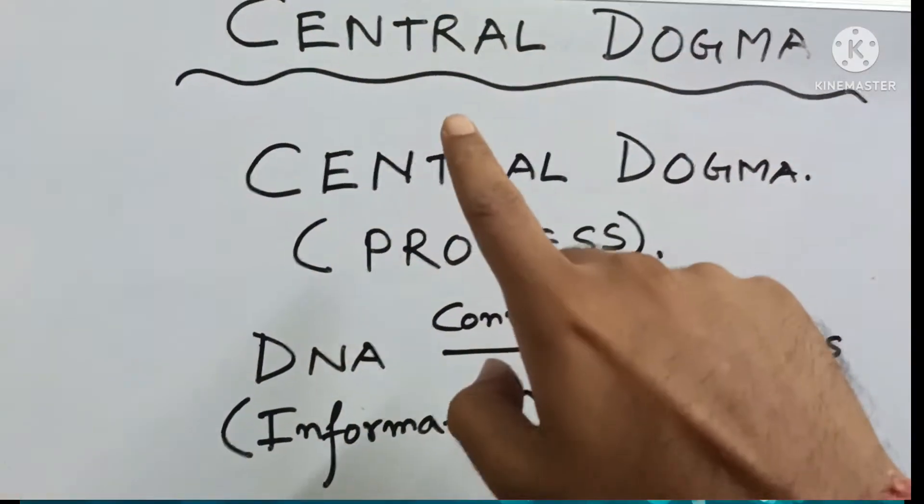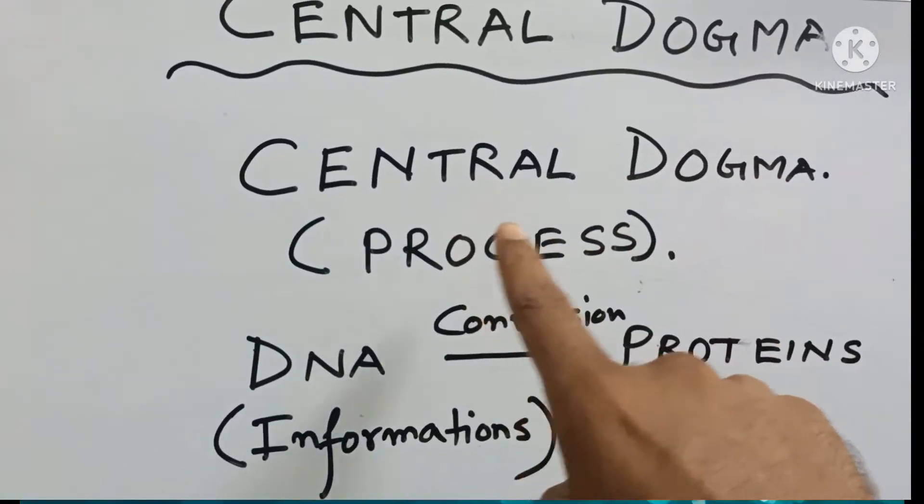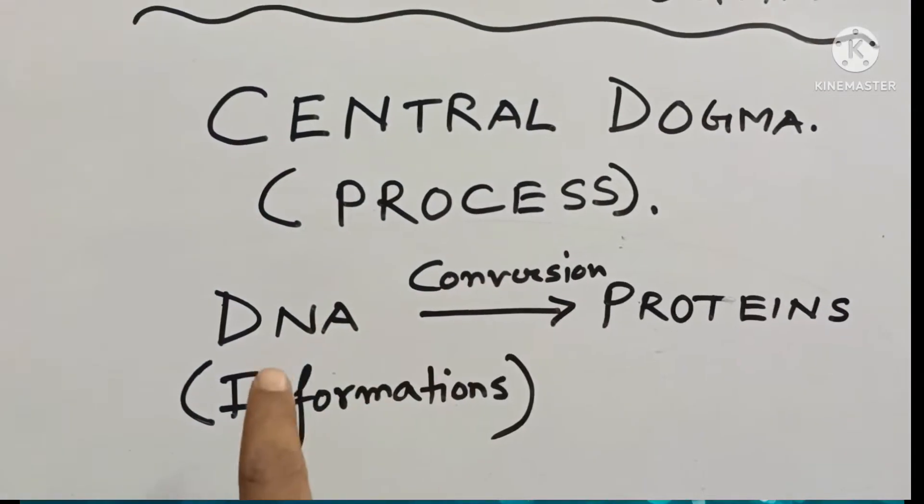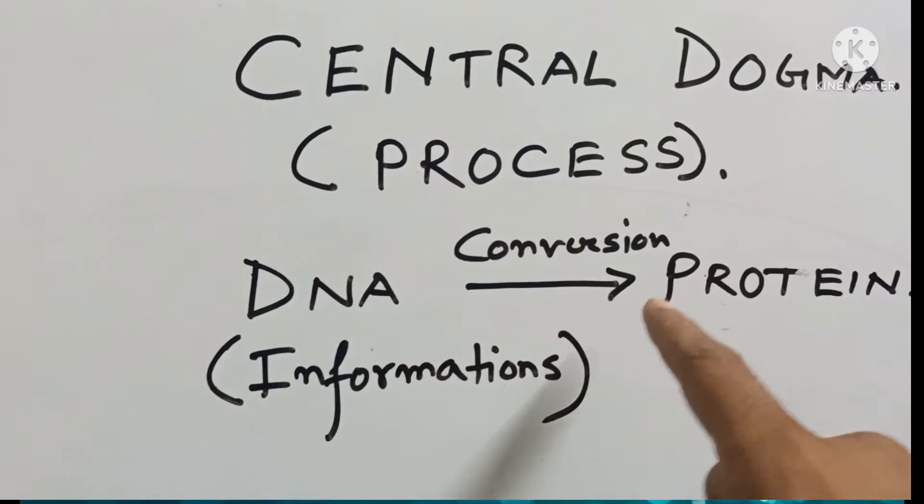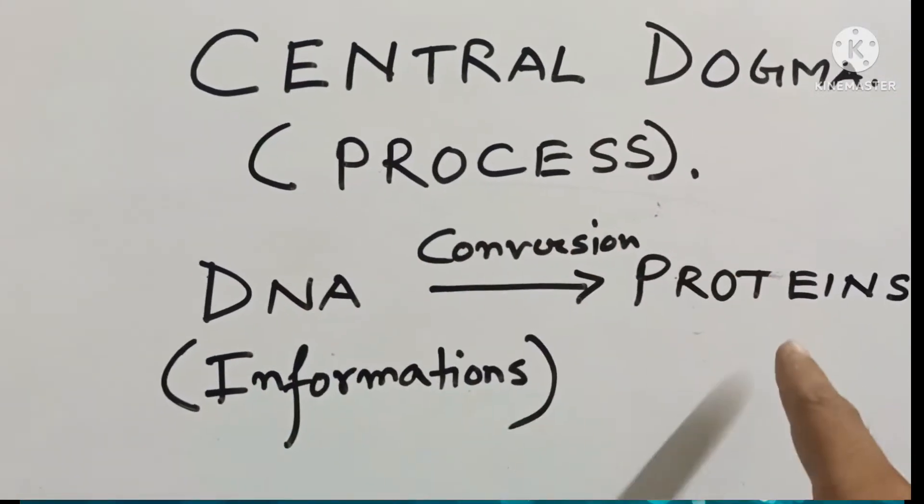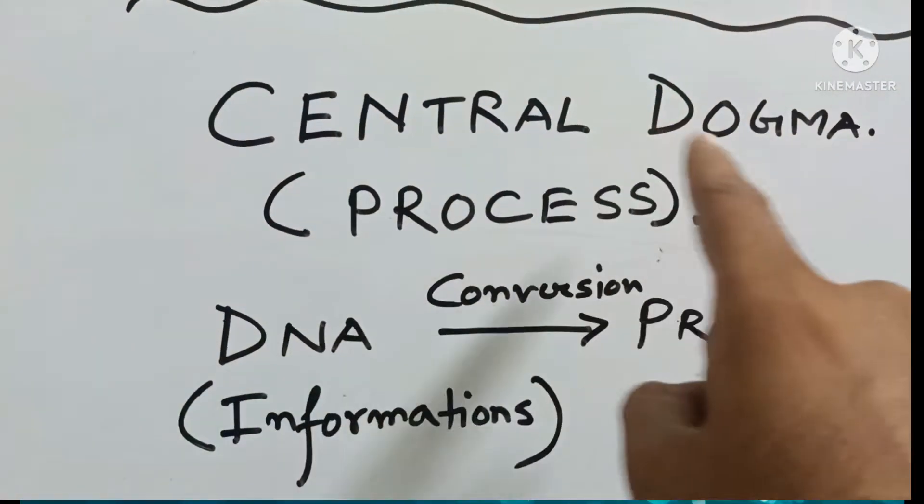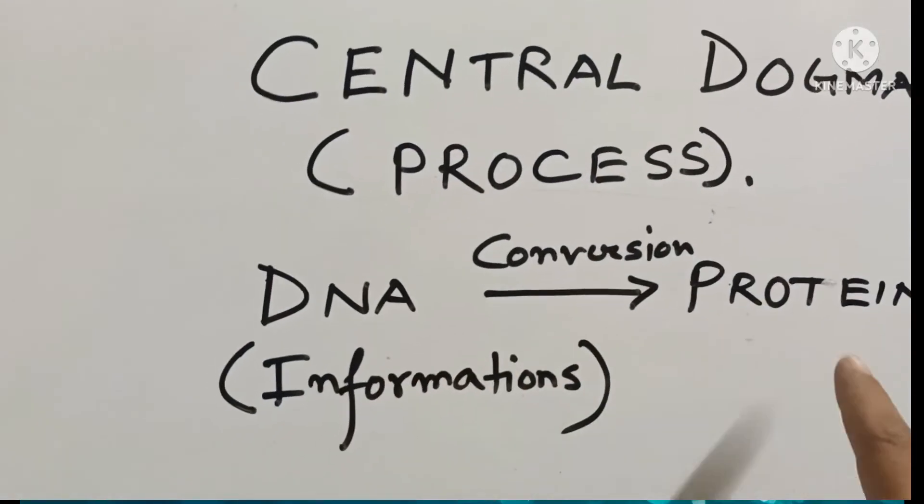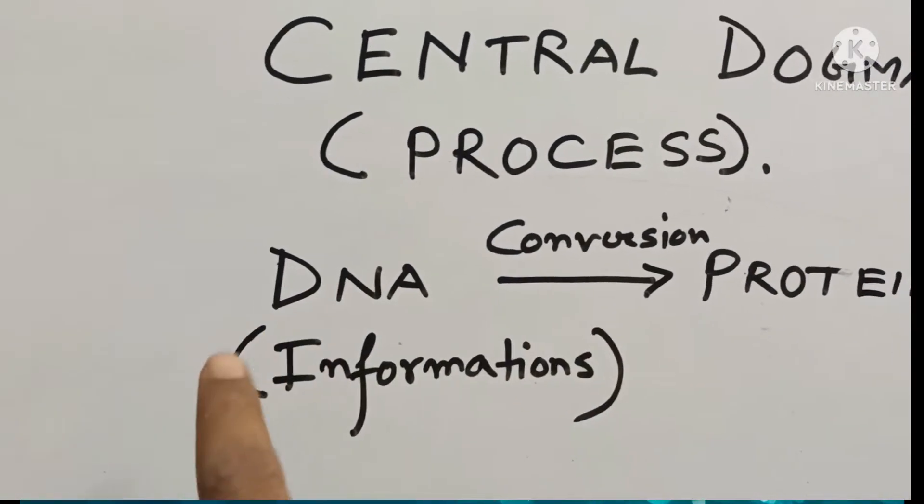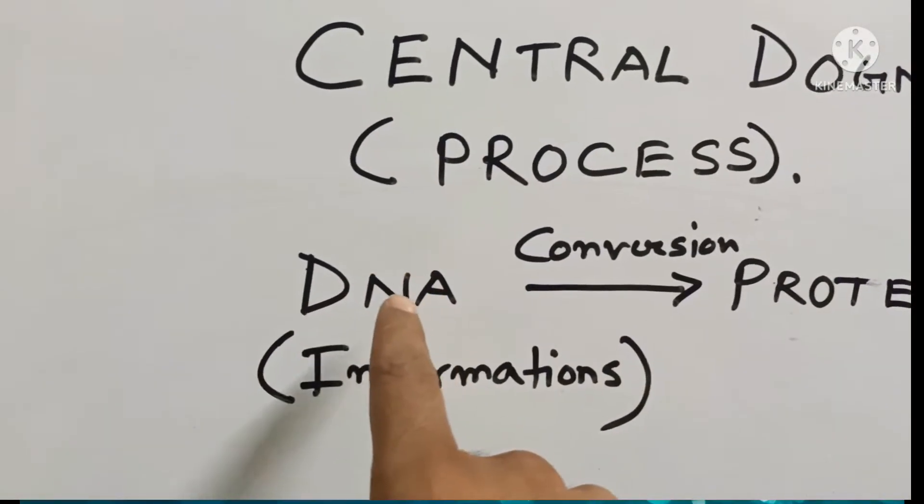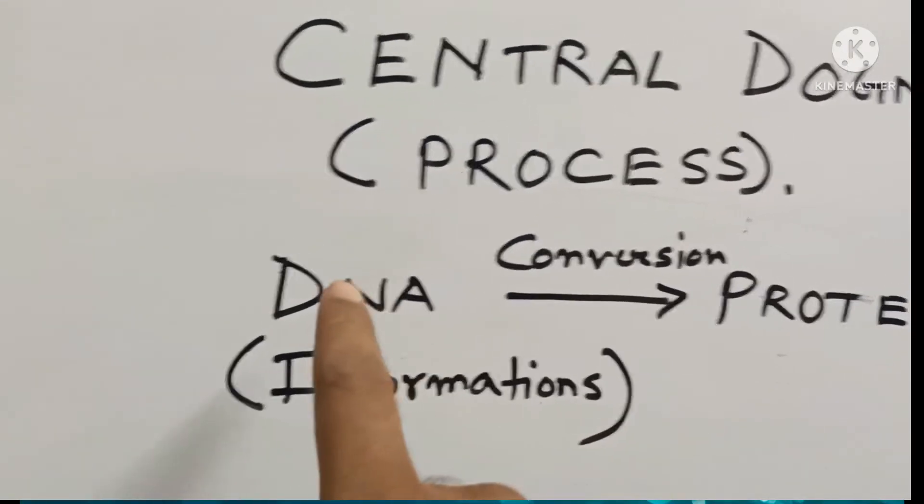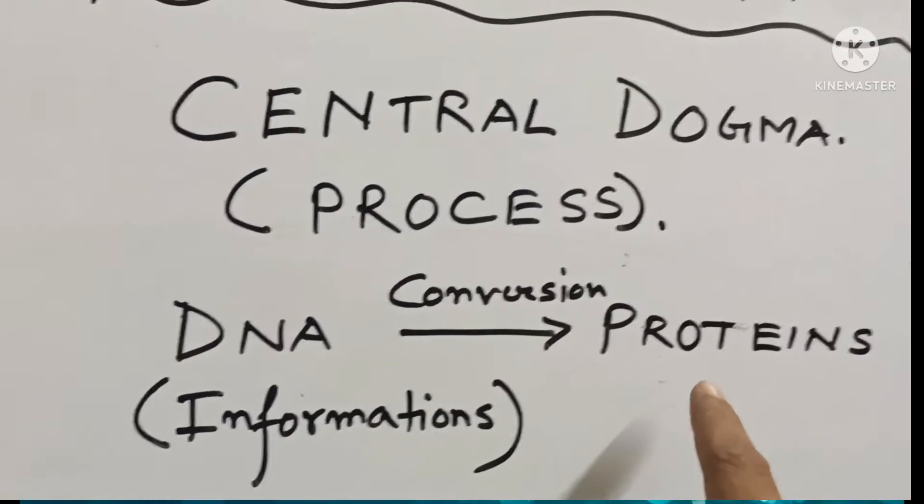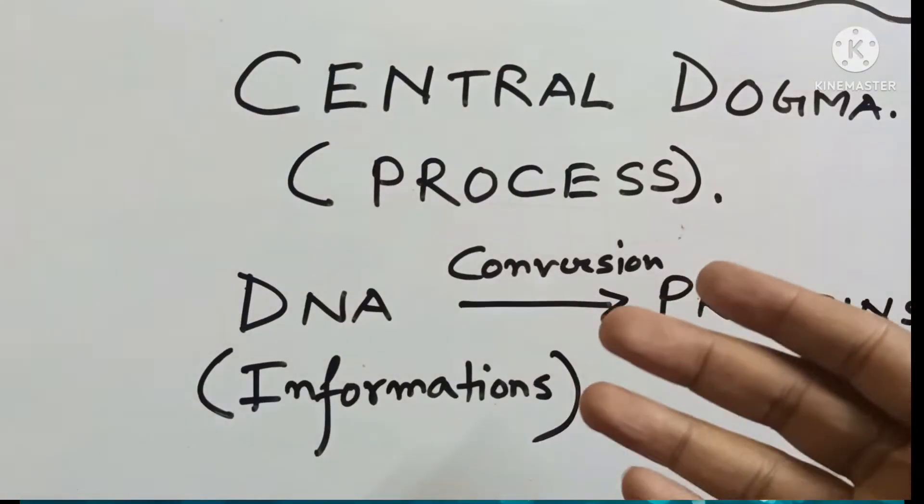What is Central Dogma? Central Dogma is a process where DNA converts into proteins. Or you may say that the conversion of DNA into proteins is called the Central Dogma in Molecular Biology. Here, the DNA uses the information present inside them and converts them into proteins. As simple as that.